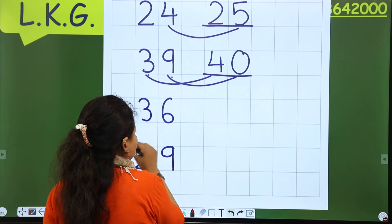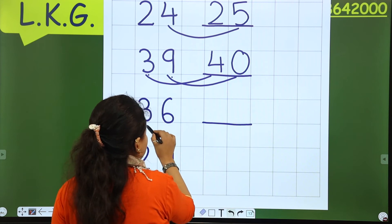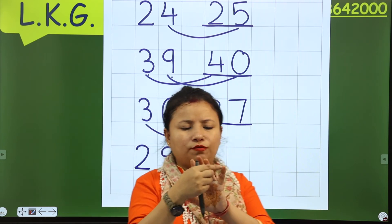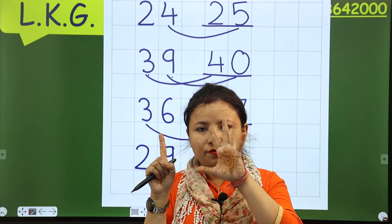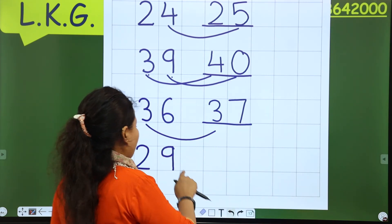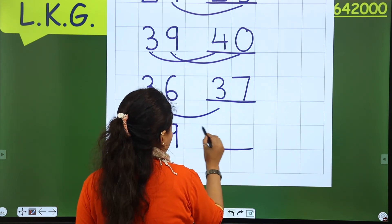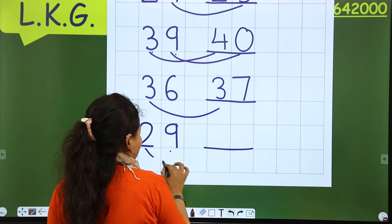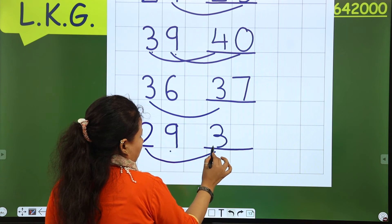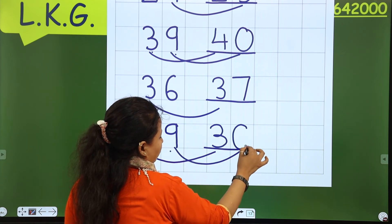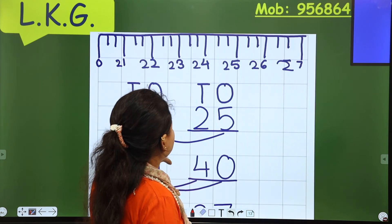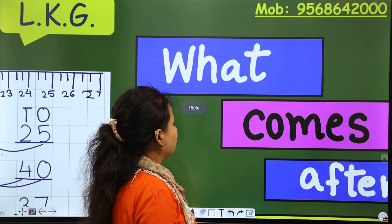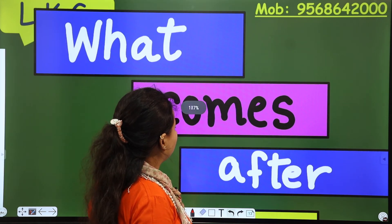Thirty-six: the next number is thirty-seven. After six comes seven — one, two, three, four, five, six — after six comes seven. Next is twenty-nine. After twenty-nine, it means the nine number will come, so both numbers will change. After two comes three, and after nine comes zero — that is thirty. So this is my concept of what comes after.